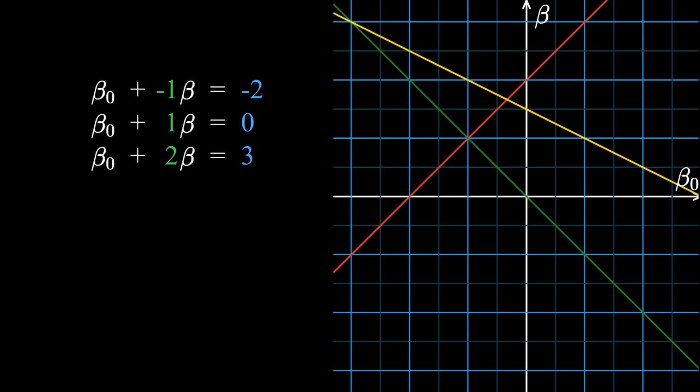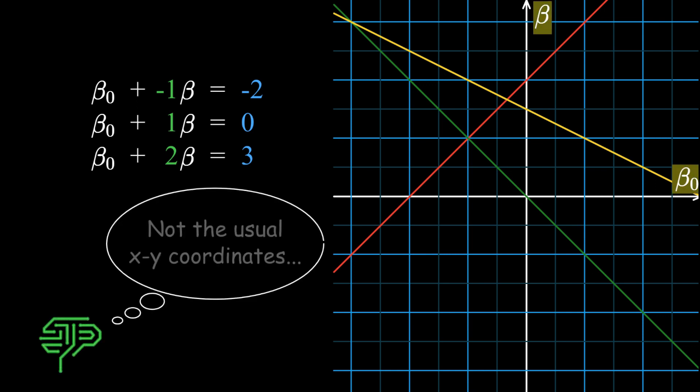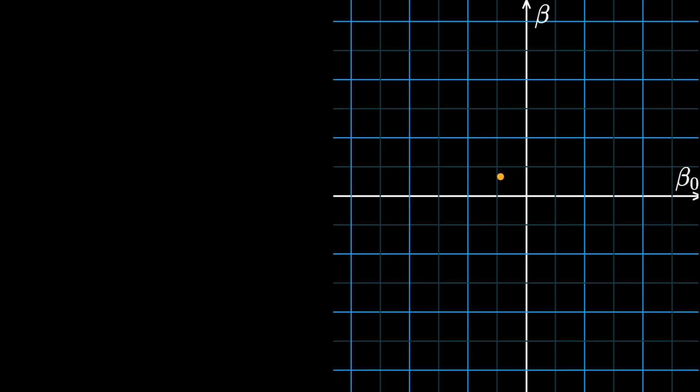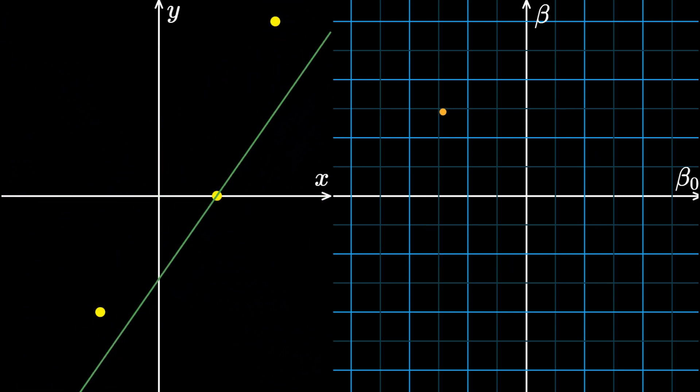However, the coordinates are not x and y now, but instead beta naught and beta. This is a little unusual and may take some time to wrap your head around. But you can think of each point on this graph to correspond to a unique line in a totally different world, the xy coordinate space.